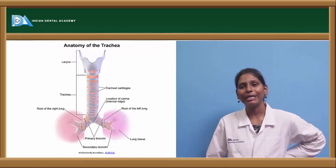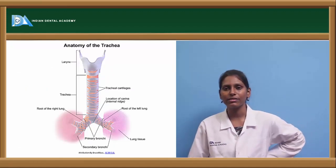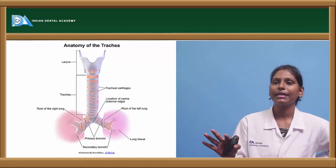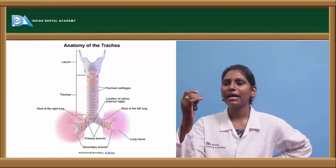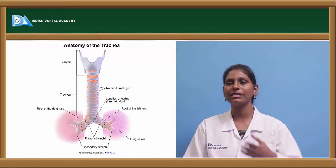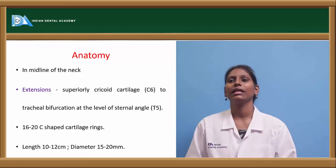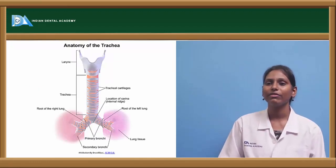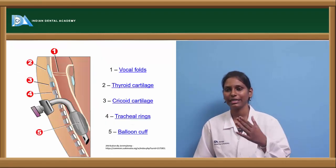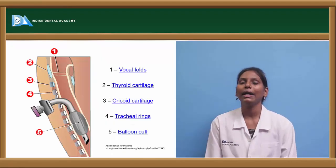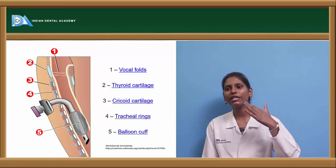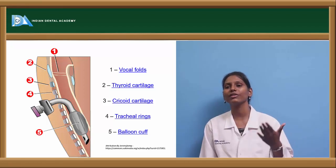There are about 16 to 20 cartilage rings, with a length of 10 to 12 centimeters and a diameter of about 15 to 20 millimeters. This picture shows trachea anatomy, where we can see the tracheal cartilage and the bifurcation at the level of the sternal angle. In this region we have the thyroid cartilage, cricoid cartilage, and tracheal rings.